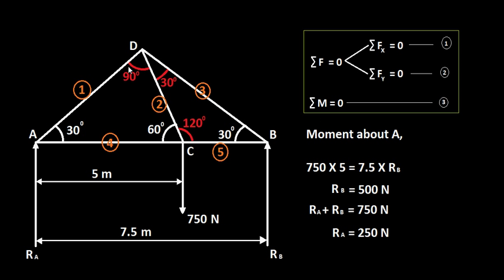I've shown the other angles because from triangle ADC you have 30 and 60 already given, and therefore this is 90 to complete the 180 degrees. From the bigger triangle you have 30 here and 30 here, and therefore this should be 120, and because this is 90, this is 30. From the smaller triangle, this is 30 and this is 30, and therefore this is 120. So the members are numbered 1, 2, 3, 4, and 5.